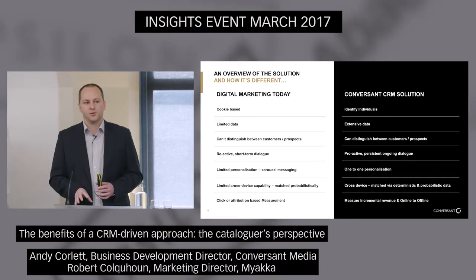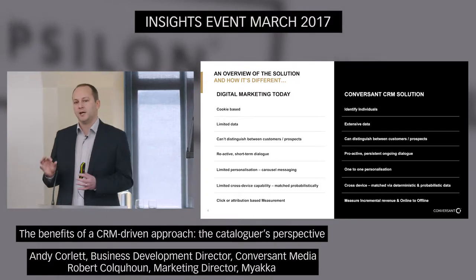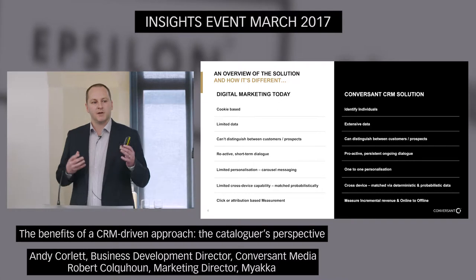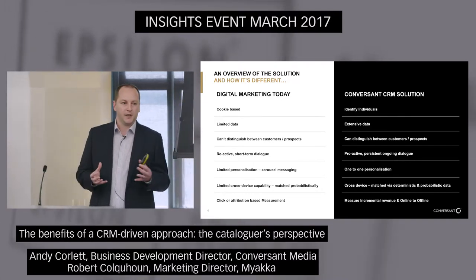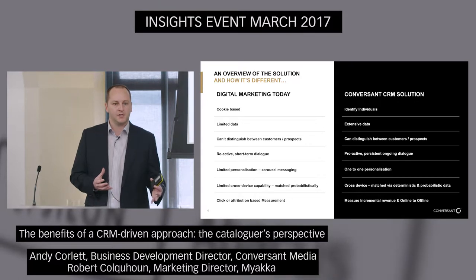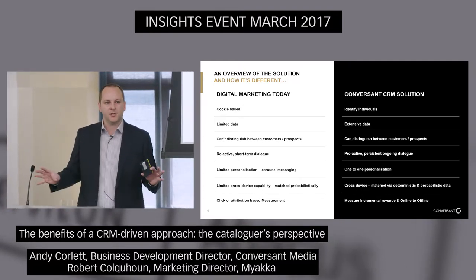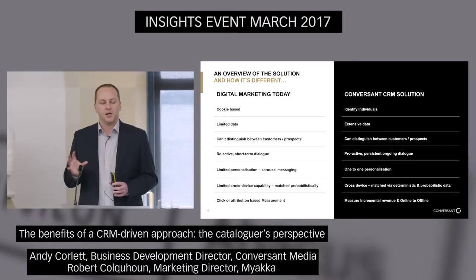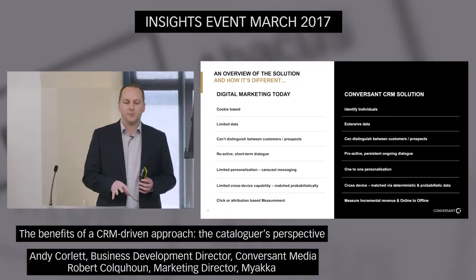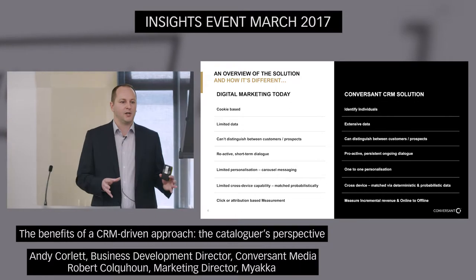Attribution is a nightmare now across all channels, because there are so many touch points before individuals actually go on to buy. What we do to help brands with that is what we call incremental measurement, where you have test and control groups chosen at random. Around 90% will receive the Conversant personalised ads, and the remaining 10% will receive brand-neutral ads — for example, charity ads. Both groups have the same opportunity to be exposed to everything else you're doing: email, direct mail, TV. The only difference is one gets the Conversant ads. From there you can see the genuine uplift. Compared to last-click attribution, this actually tells you where the true value is.